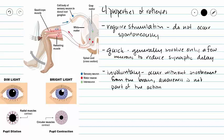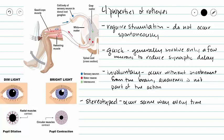Next, our reflexes are involuntary. They do not require the brain to send the signal for movement. In fact, our brain is not even aware of the action that we have taken until after that action has been carried out. And finally, our reflexes are stereotyped, meaning they occur in the exact same way every single time they happen.